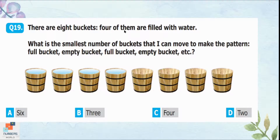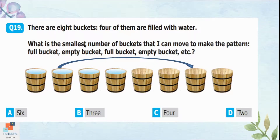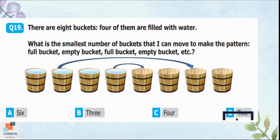Question 19: There are eight buckets and four are filled with water. What is the smallest number of buckets to move to make a full-empty-full-empty alternating pattern? We pour the water of the second bucket into the seventh bucket, and the water of the fourth bucket into the fifth bucket. Minimum two moves are needed. Option D is correct.